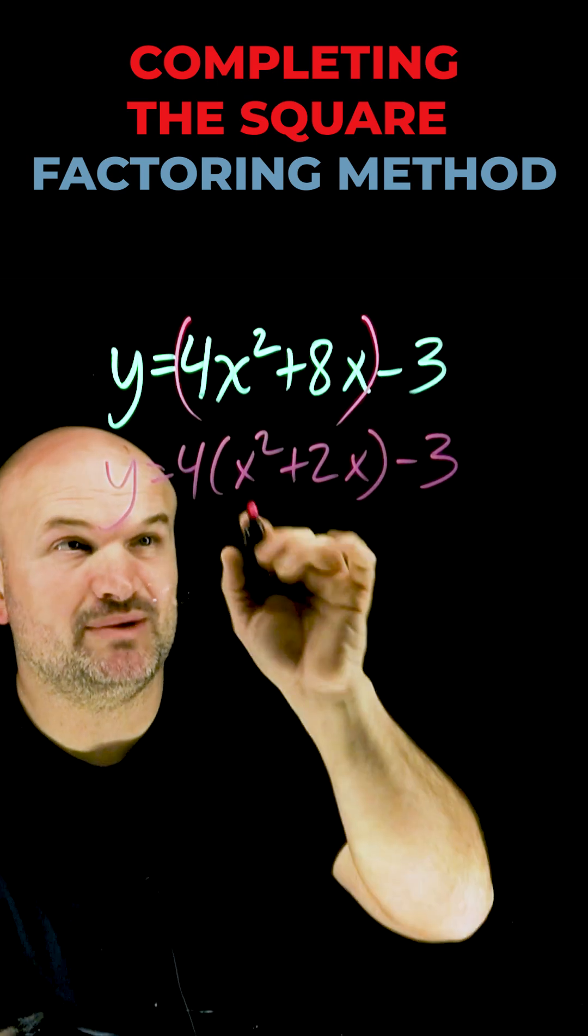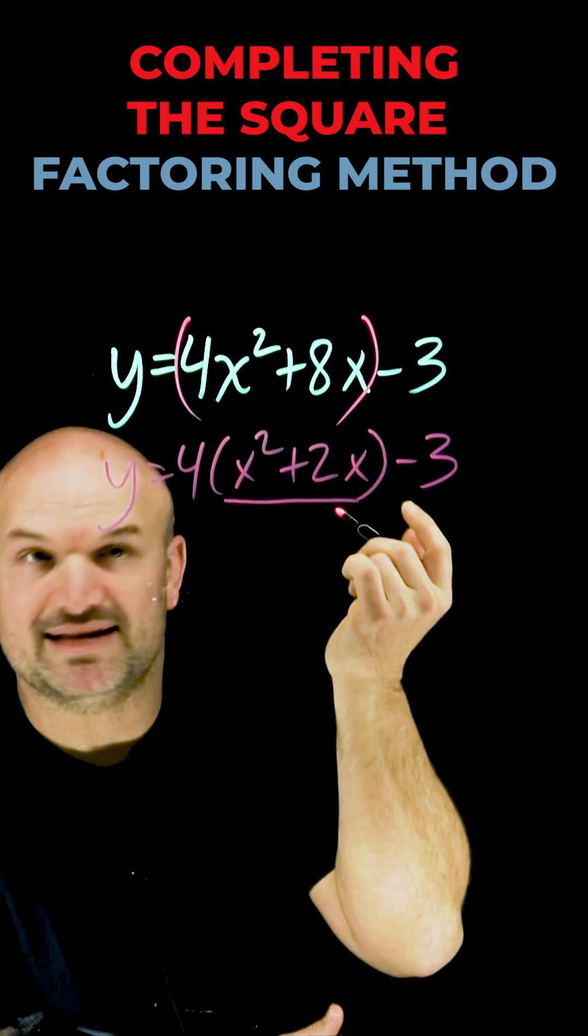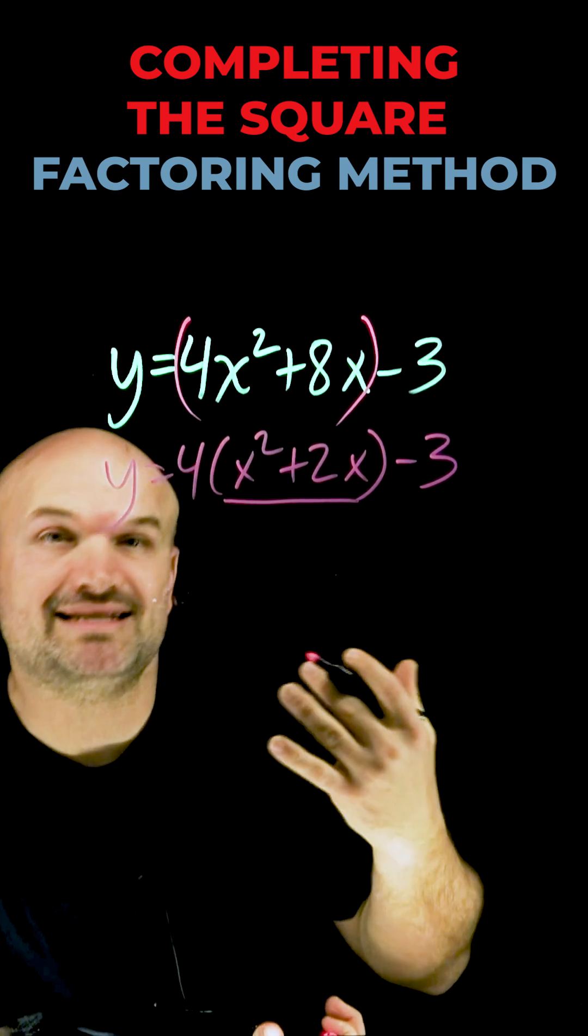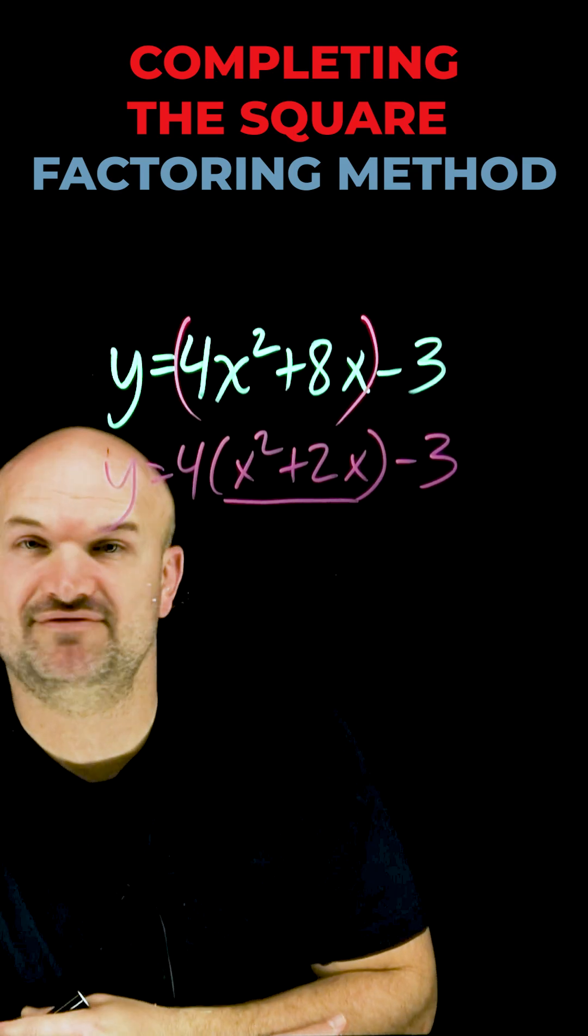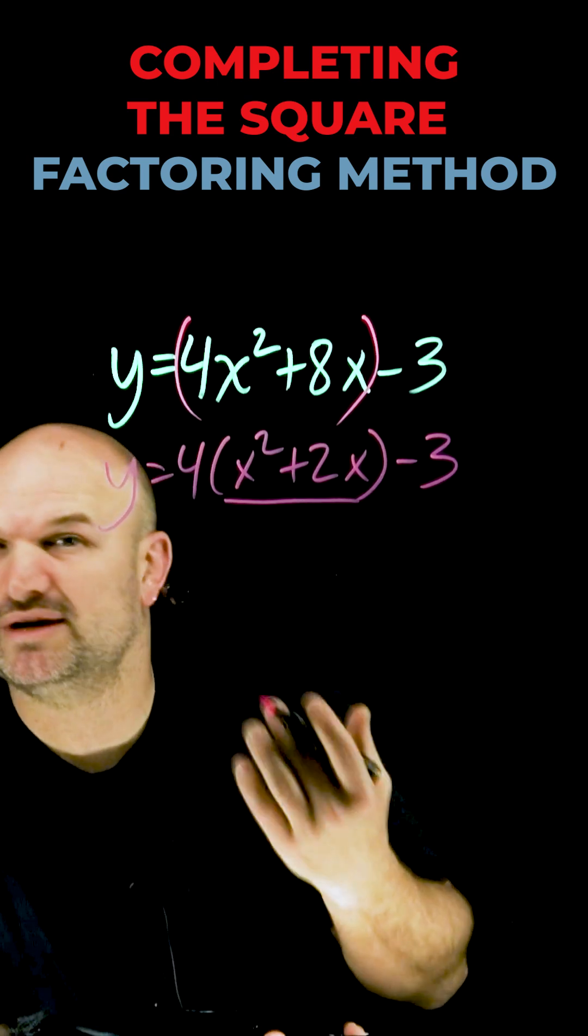Now what I need to be able to do is inside this parentheses I have a quadratic where a is not equal to 1, and I need to create a perfect square polynomial, meaning I need to find the value c that is going to create that perfect square polynomial.